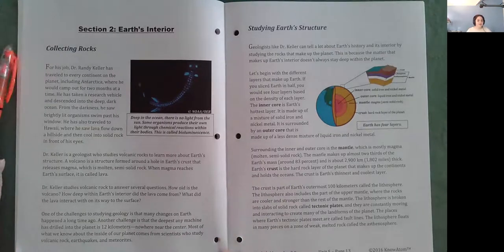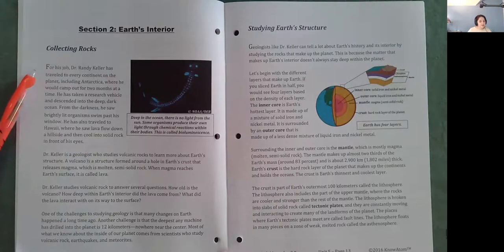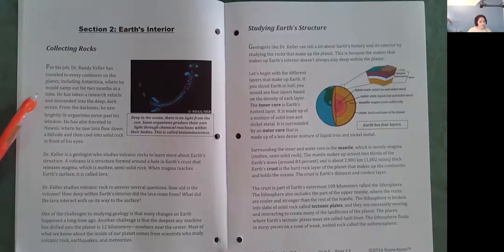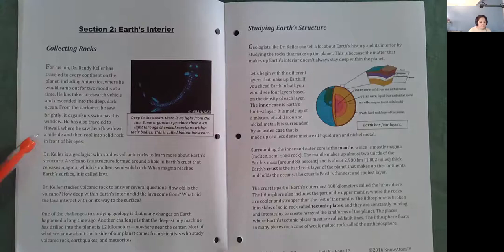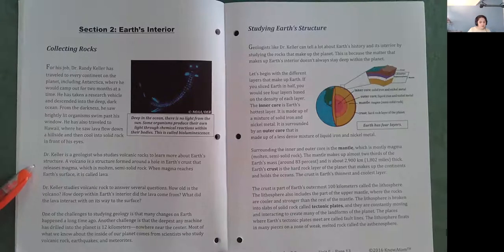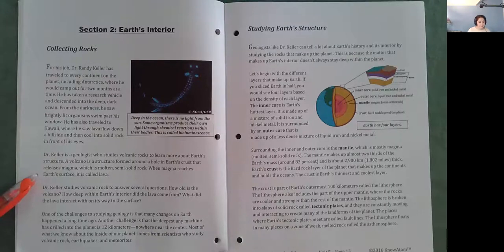Section 2, Earth's Interior. Collecting Rocks. For his job, Dr. Randy Keller has traveled to every continent on the planet, including Antarctica, where he would camp out for two months at a time. He has taken a research vehicle and ascended into the deep, dark ocean. From the darkness, he saw brightly lit organisms swim past his window. He has also traveled to Hawaii, where he saw lava flow down a hillside and then cool into solid rock in front of his eyes. Dr. Keller is a geologist who studies volcanic rocks to learn more about Earth's structure. A volcano is a structure formed around a hole in Earth's crust that releases magma, which is molten, semi-solid rock. When magma reaches Earth's surface, it is called lava.